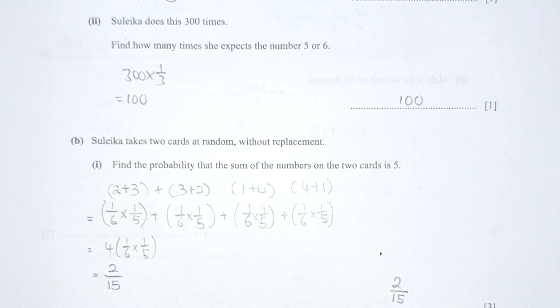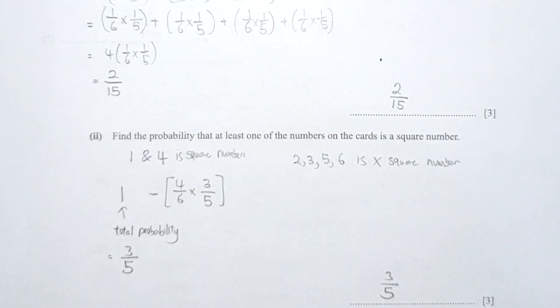For part b, finding the sum of the cards that equals 5: the possible combinations are 2 and 3, 3 and 2, 1 and 4, and 4 and 1. The arrangement matters because of the keyword 'without replacement,' which is why I repeated the same variables twice. So it's (1/6 × 1/5) + (1/6 × 1/5) for the 2+3 combination, repeated for the 1+4 combination. This gives 4 × (1/6 × 1/5), and the final result is 2 over 15.